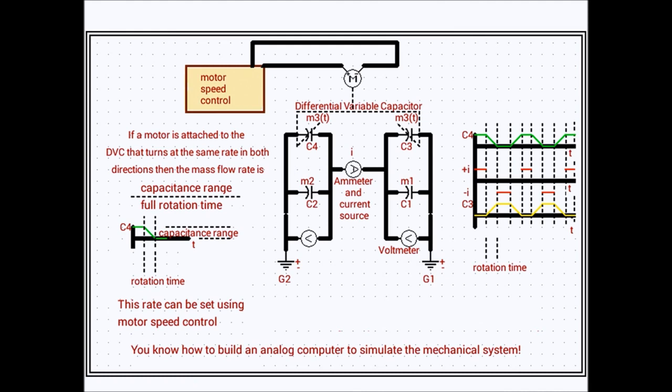And once that rotation is complete, we turn on the current. This time in the positive direction again, simulating pushing the masses apart. And the ammeter and voltmeter captures those waveforms.